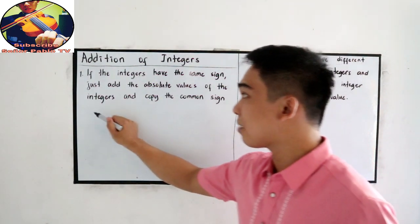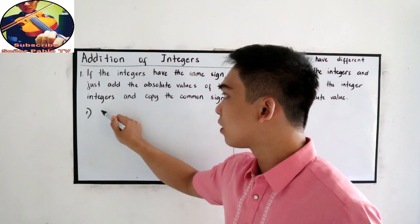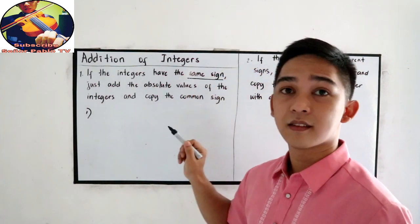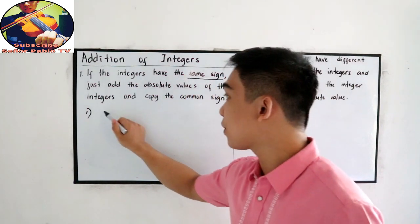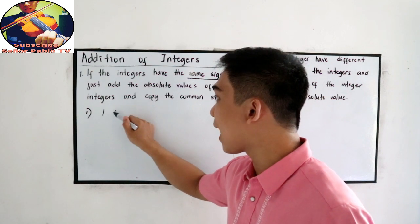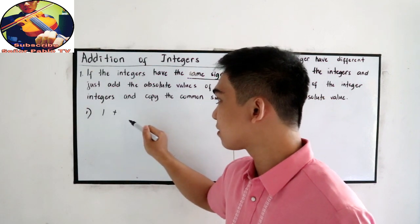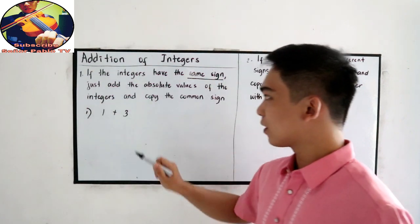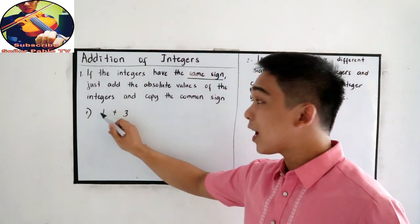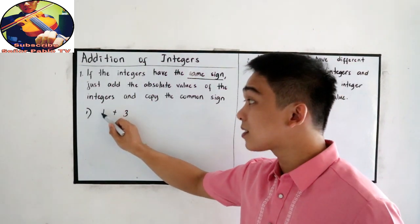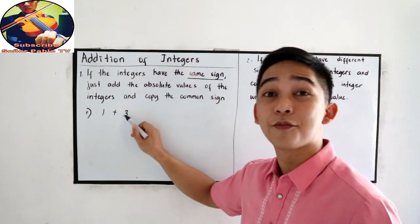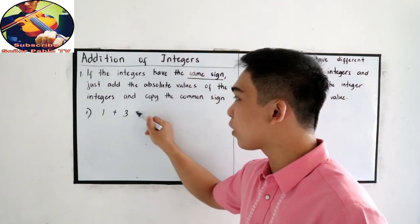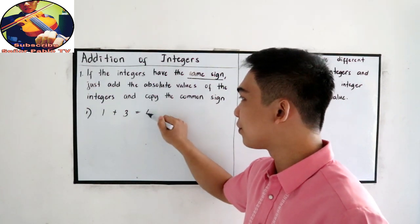So let's say, number one — they have the same sign. We have one plus three. We know that this is positive one and this is positive three. So adding that is equal to four.